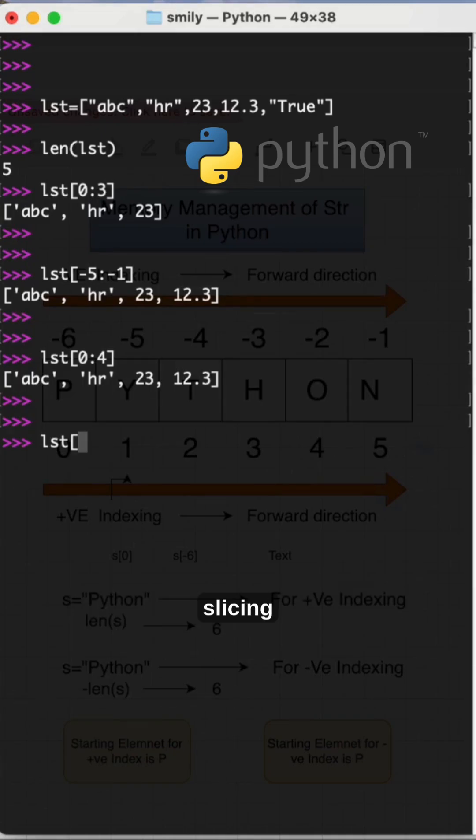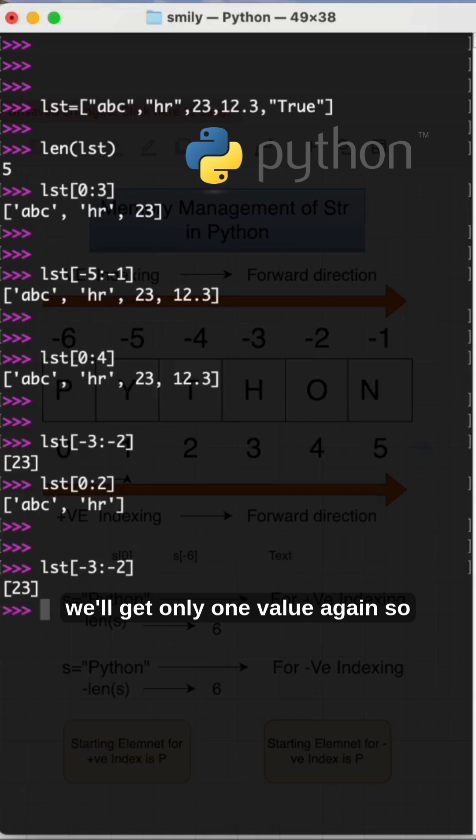Suppose I want to get 0 to 3, 0 to 2, 2 values and one more LST of minus 3 minus 2. We will get only one value again. So if you provide backward direction, suppose I have HR and ABC right. HR is minus 5 and 4 is HR. I want to give minus 4 and minus 4.